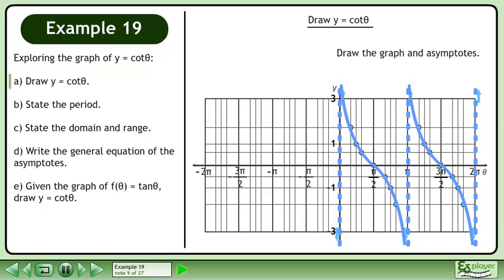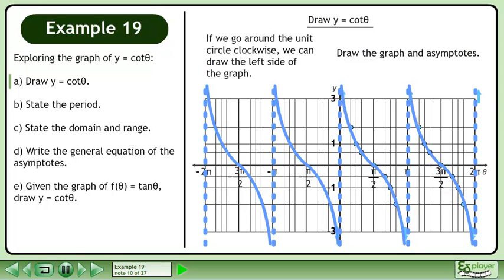Draw the graph and asymptotes. If we go around the unit circle clockwise, we can draw the left side of the graph.